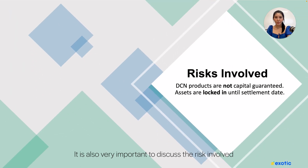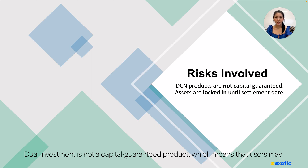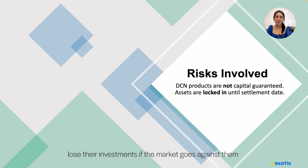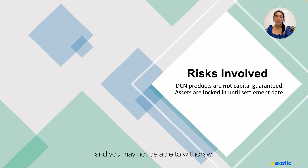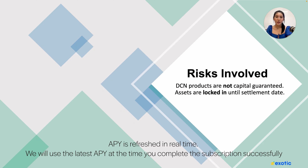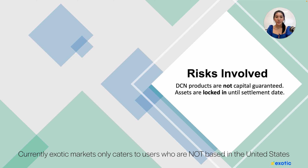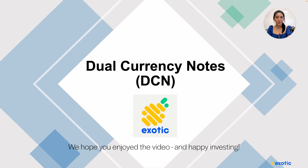It is also very important to discuss the risks involved. Dual investment is not a capital guaranteed product, which means that users may lose their investments if the market goes against them. Please also note that your funds will be locked in during the subscription period and you will not be able to withdraw. APY is refreshed in real time — we will use the latest APY at the time you complete the subscription successfully. Currently, Exotic Markets only caters to users who are not located in the United States. We hope you enjoyed the video — happy investing.